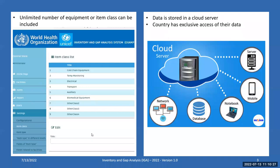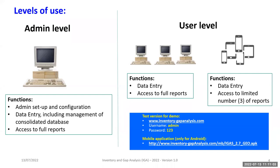There is an unlimited number of equipment or item classes that can be included - cold chain equipment, temperature monitoring devices, electrical or electronic devices, transportation vehicles, or biomedical equipment. The data is stored in a cloud server and each country has exclusive access to their own data, so if you are concerned about ownership of data, this provides that assurance.